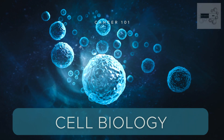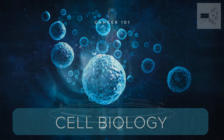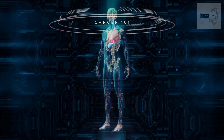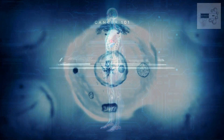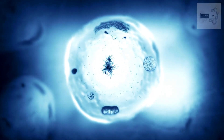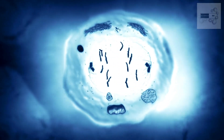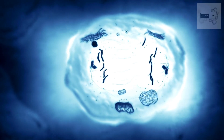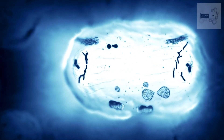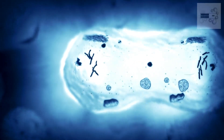Cells are the basic unit of life, and all living organisms are made up of cells. Cells have a tightly regulated cell cycle, which includes phases of growth, DNA replication, and cell division.